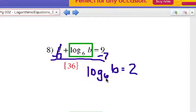Alright, exponentially, we can write it as six to the second power equals b. And that's why, of course, my answer is 36. Alright, are you doing alright?